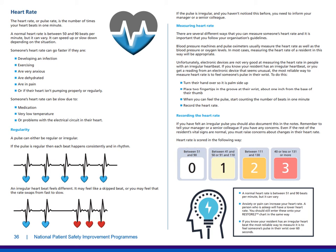There are several different ways to measure someone's heart rate; it's important to follow your own organisation's guidelines and use the equipment provided. If you felt an irregular pulse, document it in the notes and tell your manager or a senior colleague if you have any concerns. Even if the rest of the resident's vital signs are normal, you must raise concerns about changes in their heart rate. The scale is scored between 0 — which is between 51 and 90 — to a score of 3 — which is 40 or less, or 131 or more. To summarise: a normal heart rate is between 51 and 90 beats a minute. Anxiety or pain can increase your heart rate, and if you know your resident has an irregular heartbeat, the most reliable way to measure it is to feel someone's pulse in their wrist over 60 seconds.